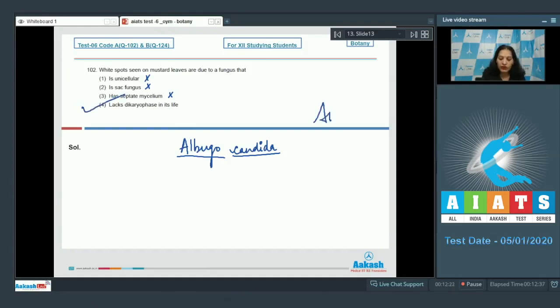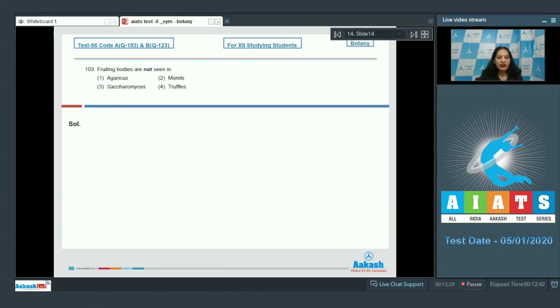So the correct option for the given question is option number four. Let's pick up the next question. Question number 103: Fruiting bodies are not seen in which organism? Fruiting bodies are seen in Agaricus mushrooms, morels, and truffles. Yes, ascomycetes. Although Saccharomyces or yeast belongs to the class ascomycetes, being unicellular it does not produce fruiting bodies. So the correct option for the given question is option number three.